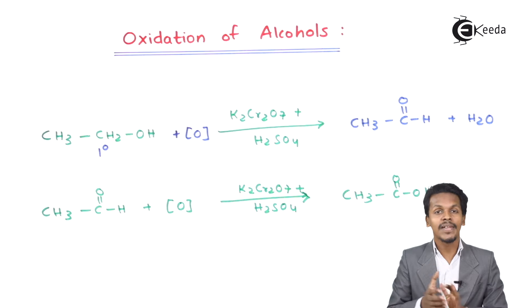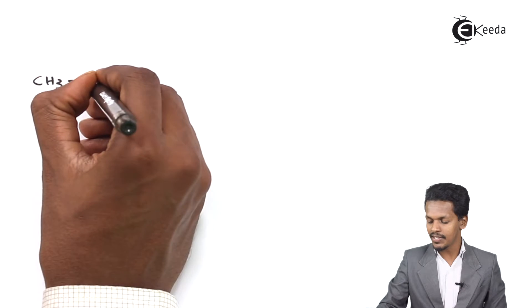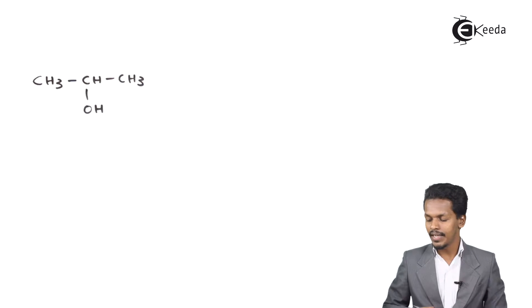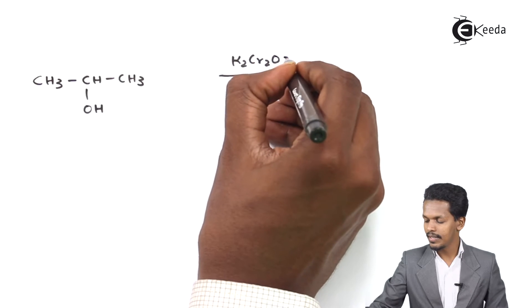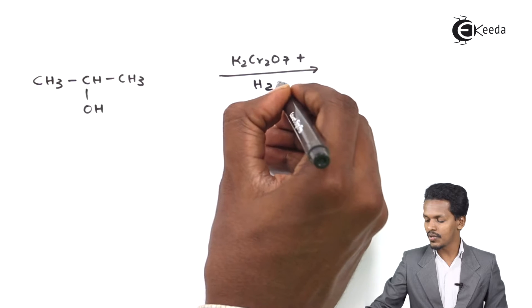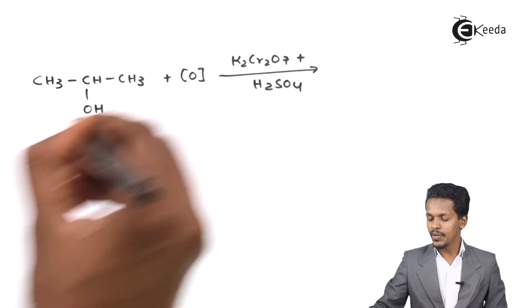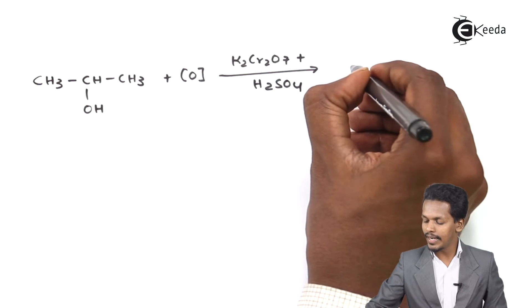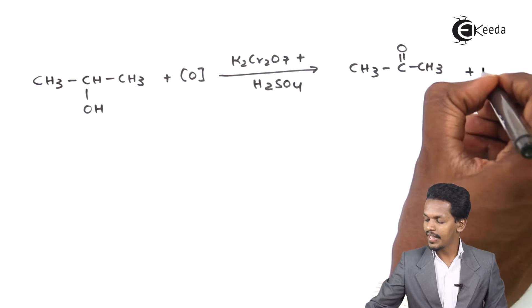Now let us talk about what happens when secondary alcohol undergoes oxidation. Consider the secondary alcohol CH3CHOHCH3 (isopropanol). Using the same oxidizing reagent K2Cr2O7 in acidic conditions with H2SO4, the nascent oxygen produced removes water as a byproduct, and we get a ketone: CH3C(=O)CH3, plus H2O.